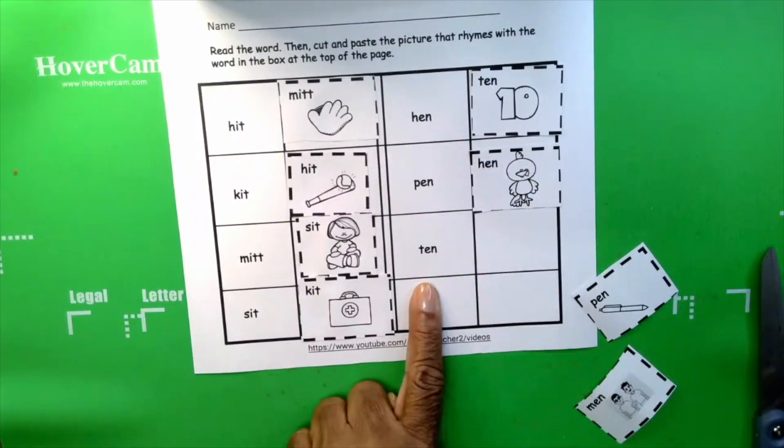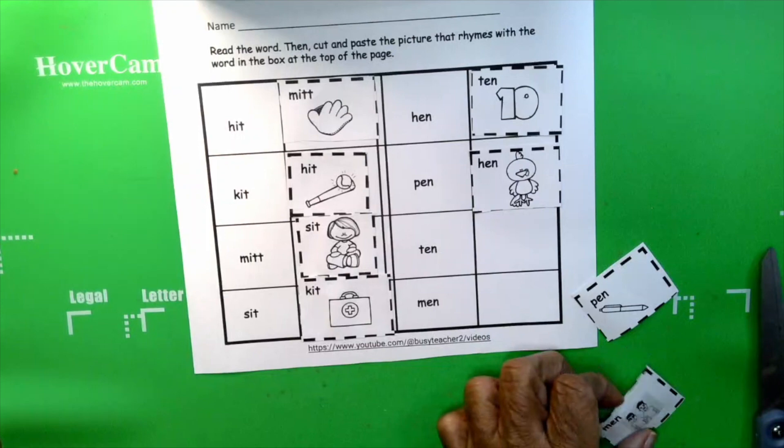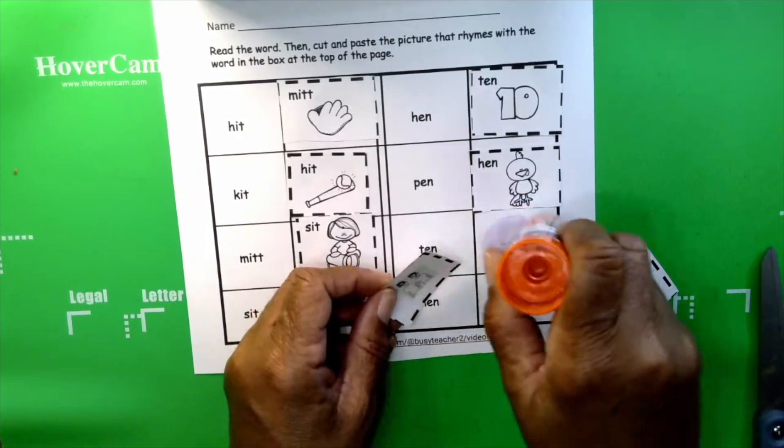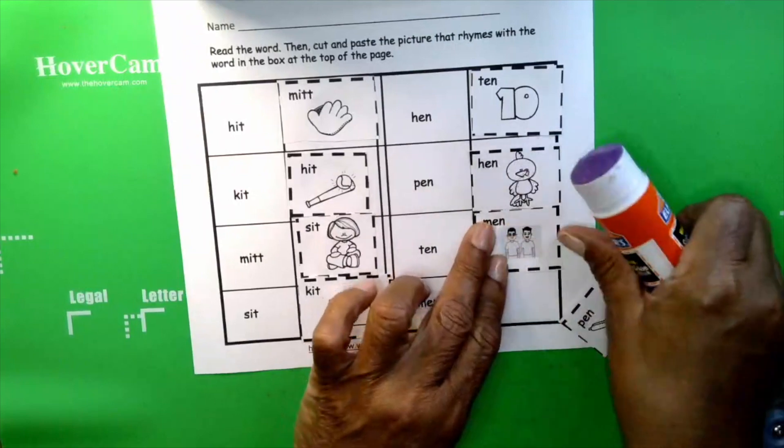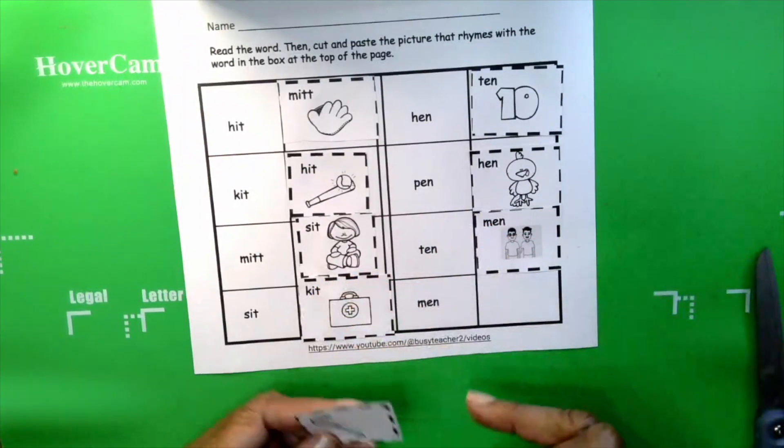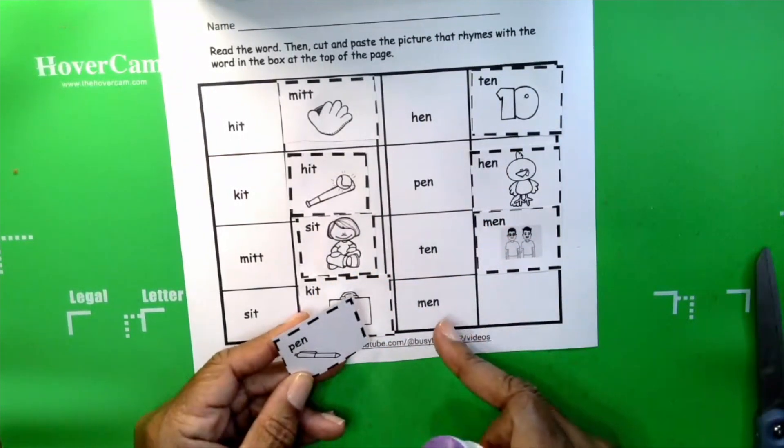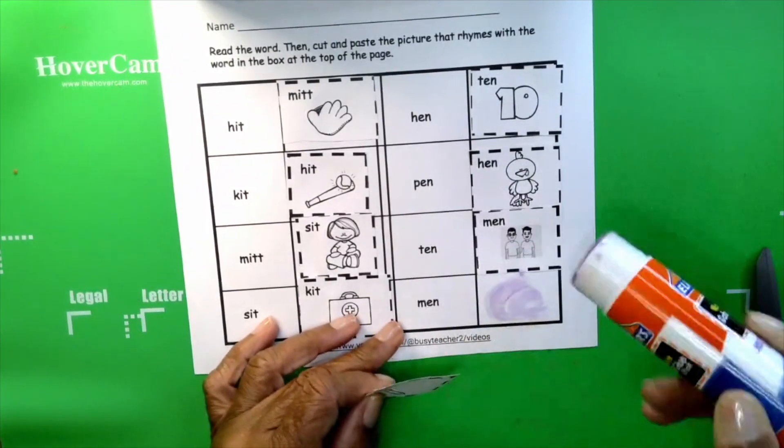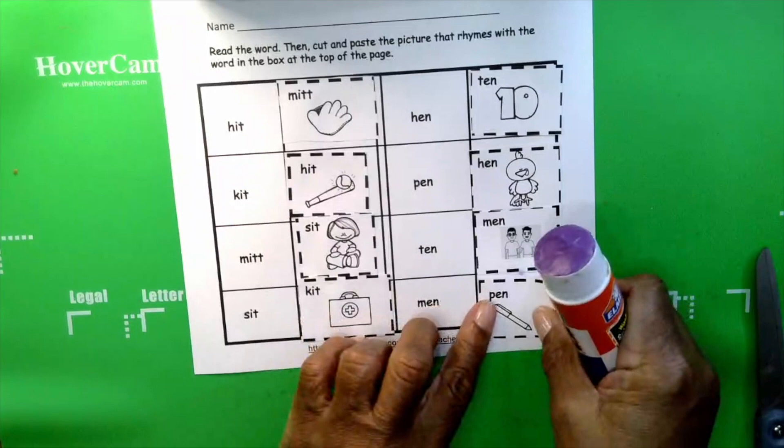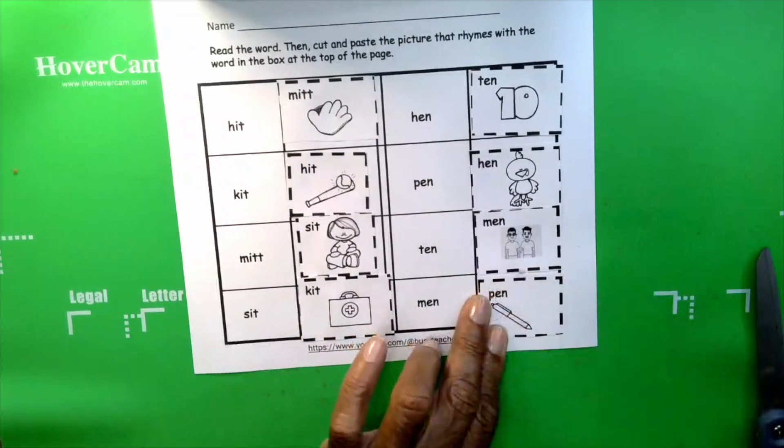Ten, men. Ten, men. And pen, men. Men, pen. You're doing a great job, boys and girls. Here we are. We're done. How about that?